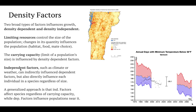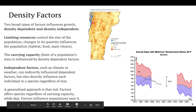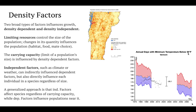Density-independent factors, such as climate and weather, can indirectly influence dependent variables like food availability, but they also directly influence populations regardless of size — they affect every individual whether there are 10, 100, or 1,000 moose. For example, Vermont's number of days below 32 degrees Fahrenheit has significantly decreased over time, which has really influenced the number of ticks found on moose.